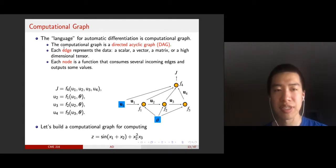For automatic differentiation, the computational graph is a directed acyclic graph, which means that the edges have a direction and the graph has no loops. In this computational graph, the edges represent the data, which can be a scalar, vector, matrix, or high-dimensional tensor. Each node is a function that consumes several incoming edges and outputs some values. Without loss of generality, we can assume that each node or function outputs only one edge.